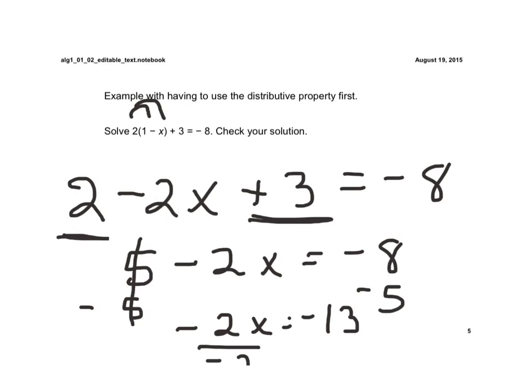We have negative 2x is equal to a negative 13. And we divide by negative 2. And we get x is equal to, and we're either allowed to leave it as an improper fraction of 13 halves. The negatives go away. Or you could change it into a mixed number of 6 and 1 half.